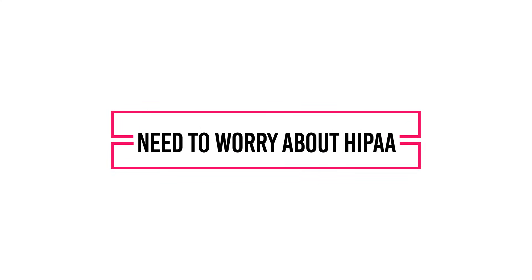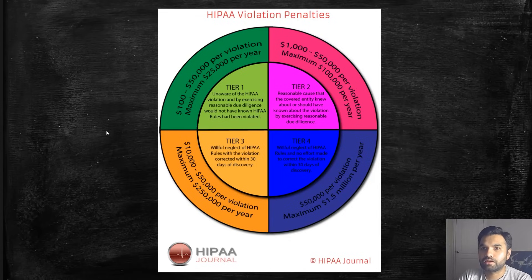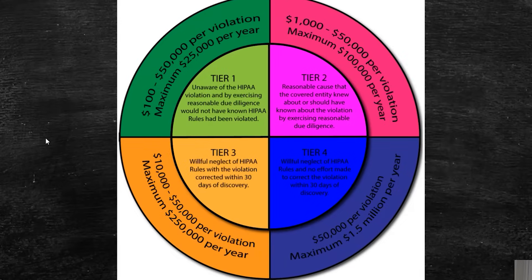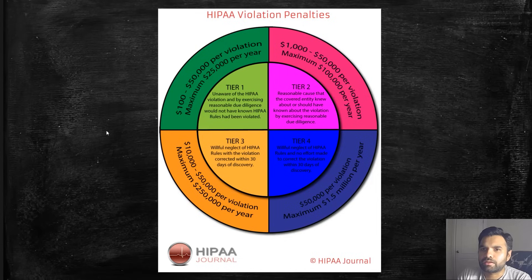Why do organizations need to worry about HIPAA? If they are storing or processing patient information and they violate HIPAA policy, they face penalties by tier. Tier 1 is when they are unaware of the HIPAA violation. Tier 2 is reasonable cause — the covered entity knew about it. Tier 3 is willful neglect of HIPAA rules. Tier 4 is neglect with no effort made to correct the violation within 30 days of discovery, which can result in a maximum penalty of $1.5 million per year.